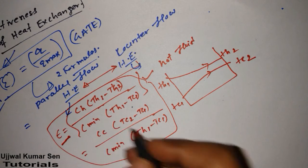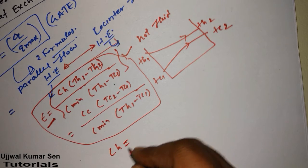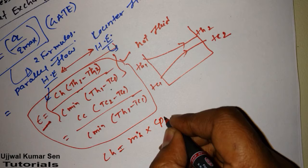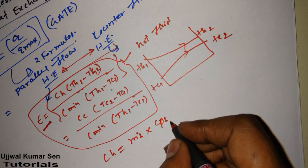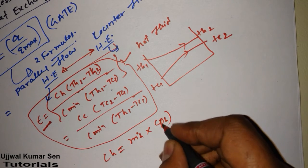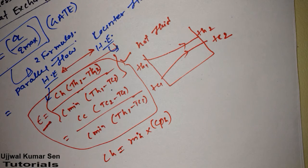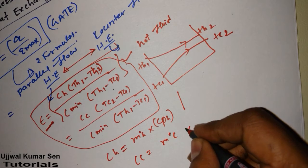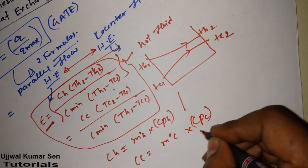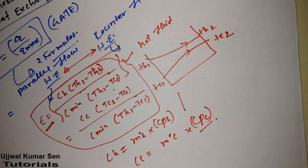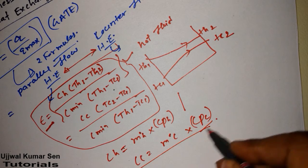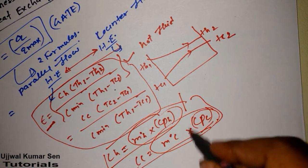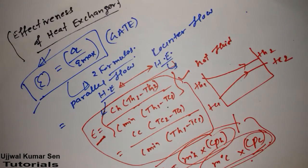C_h equals the mass flow rate of hot fluid multiplied by c_ph, the specific heat at constant pressure for the hot fluid. Similarly, C_c equals the mass flow rate of cold fluid multiplied by c_pc, the specific heat at constant pressure for the cold fluid. These values are generally given in numerical problems.